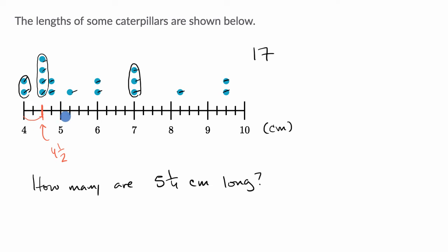Five and one-fourth is going to be more than five. To get to five and one-fourth, we divide the interval between five and six into four equal sections. They already did that for us.